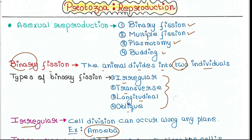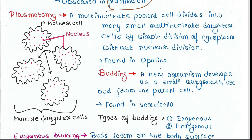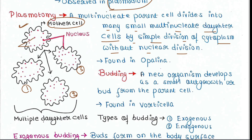Next we have plasmotomy. Here, a multinucleate parent cell divides into many small multinucleate daughter cells by simple division of cytoplasm, without nuclear division. The parent cell has many nuclei, and when it divides, daughter cells are generated by division of the cytoplasm, but nuclear division does not occur. This is found in opalina.